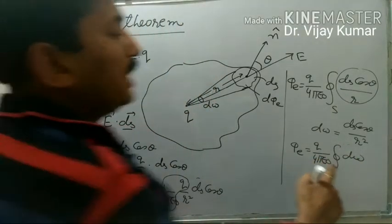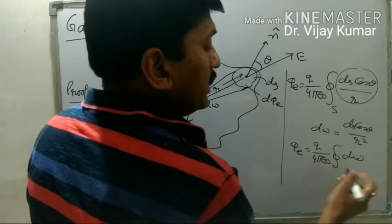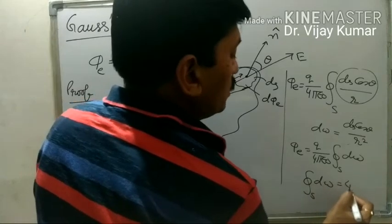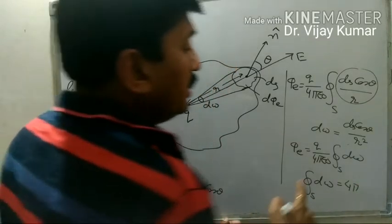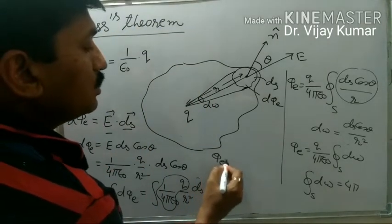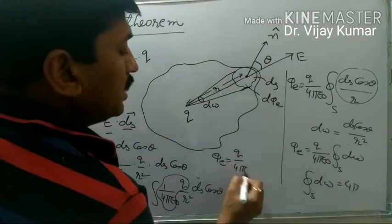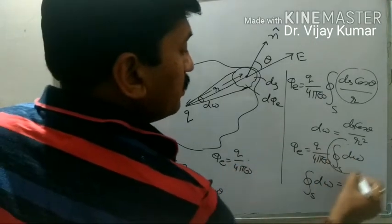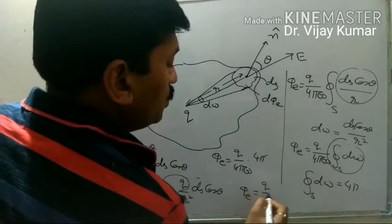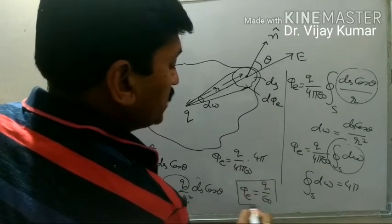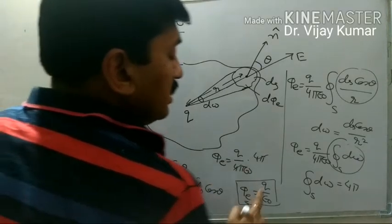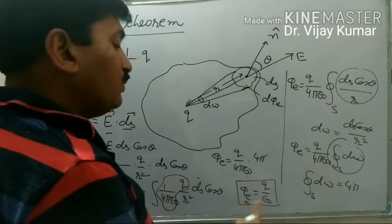It means this part becomes d omega, and phi e is q upon 4 pi epsilon naught times the surface integration of d omega. We also note that the surface integration of the solid angle — ds cos theta upon r square — is equal to 4 pi. So 4 pi cancels out and phi e is equal to q upon epsilon naught. This means the flux passing through a surface equals 1 upon epsilon naught times the charge enclosed by the surface. This is the proof of Gauss theorem.